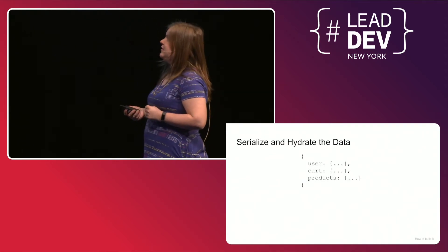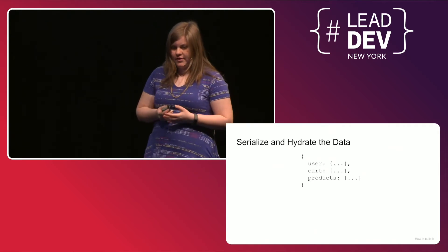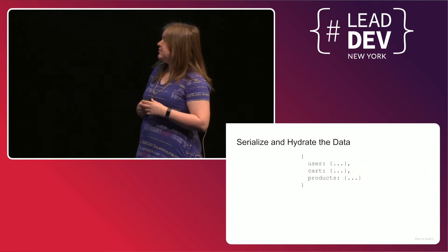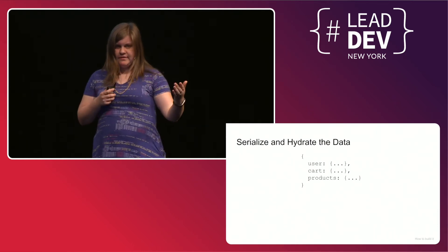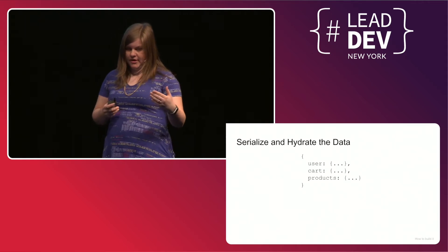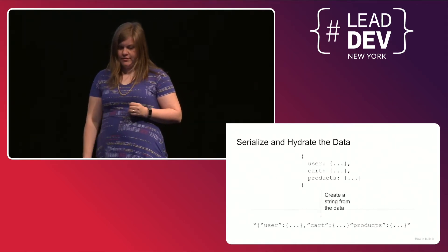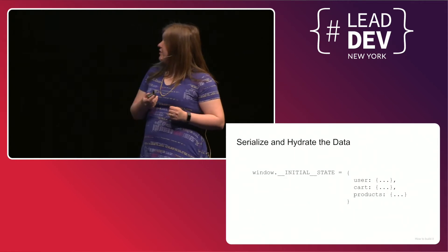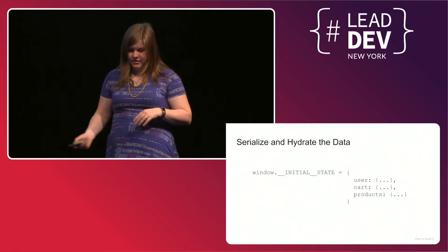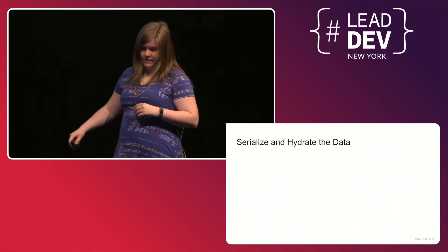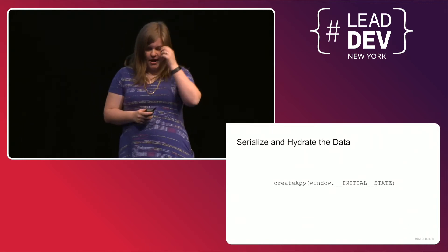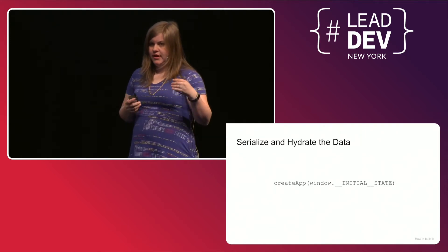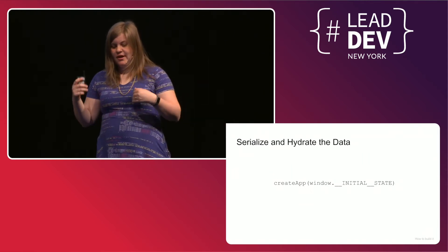Let's take a moment and talk about the magical part of this — why it's different from other things. When a request comes to your server, you fetch your data. Here we have an example: a user with a cart and some products. We need to get this data to the browser to build the UI. So we create a string from this data, and then in the browser we deserialize that back into a variable called initial state. We use that initial state to start up our app, creating it in the browser with the exact same state and therefore the exact same HTML as on the server.